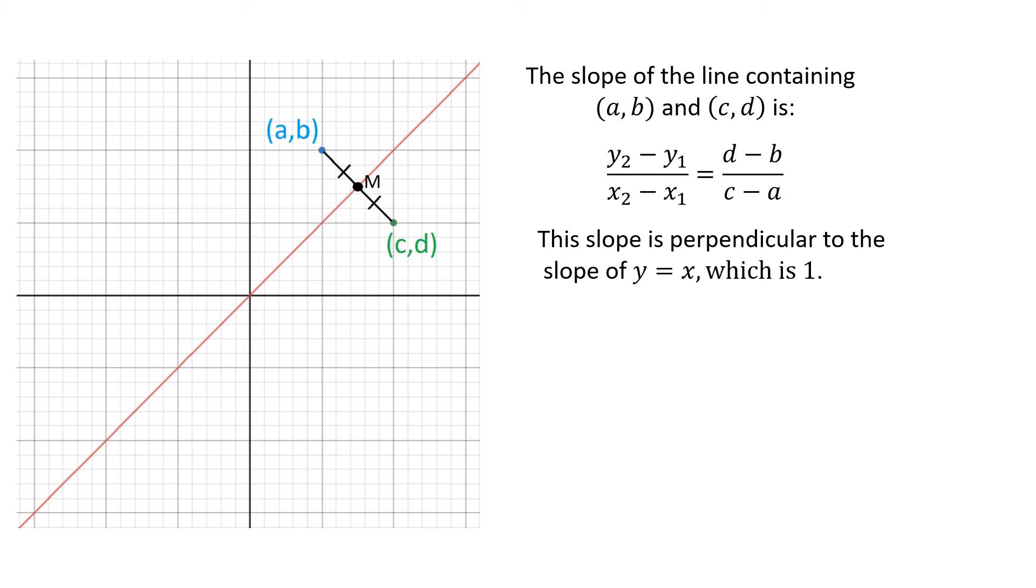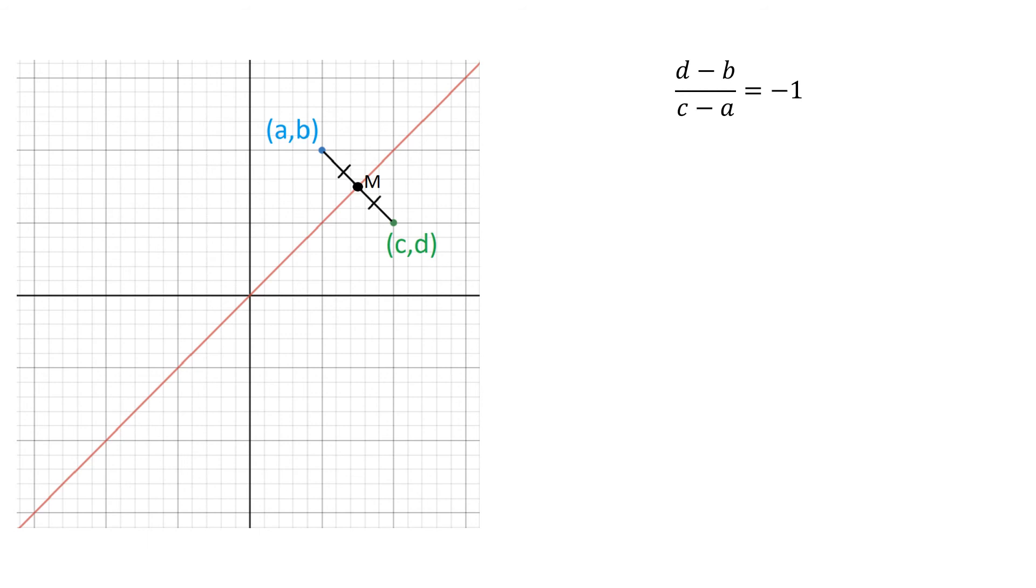The red line has a slope of 1. And any line that is perpendicular must be the opposite reciprocal. So the opposite reciprocal is negative 1. In other words, the slope d minus b over c minus a is negative 1. We'll do a little algebra with this equation.